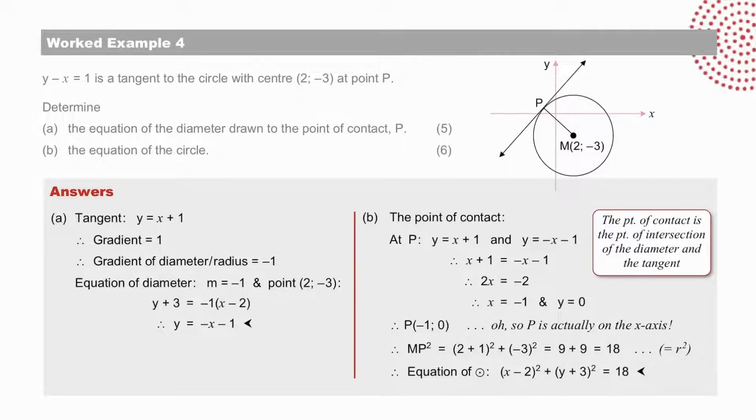From the equation of the tangent, y equals x plus 1, the gradient is equal to 1. And therefore, the gradient of the diameter is minus 1. And we find the equation of the diameter by substituting the gradient and the point. Check your answer.